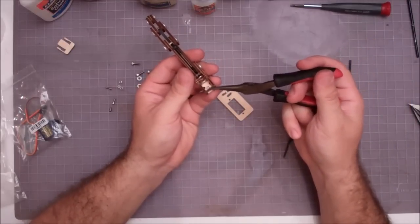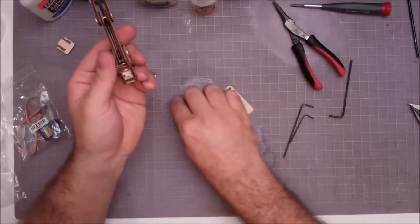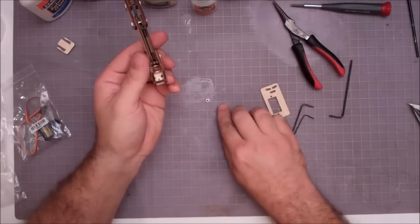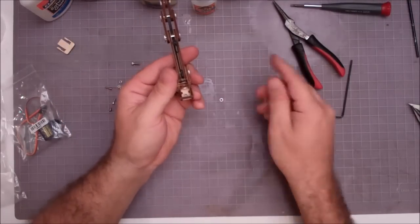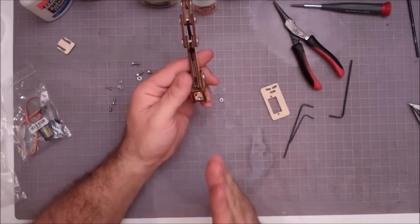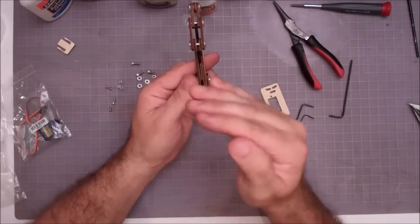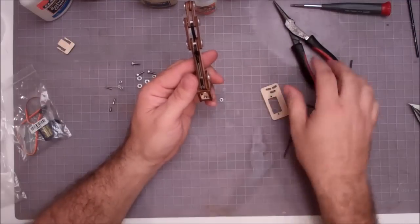Now, the bottom slot, you want to get the flat sides of the nut. You have flat sides of the nuts, pointed sides of the nuts. You want to line up the flat sides of the nut with the flat sides of the little bracket and slide the nut in. So the flat sides stay parallel.